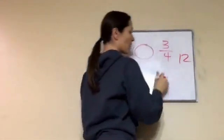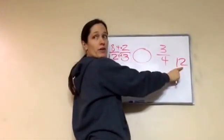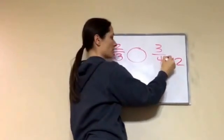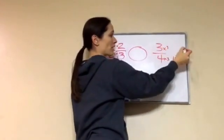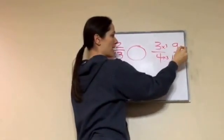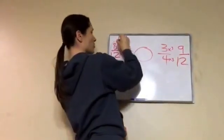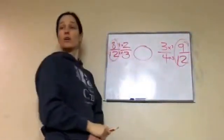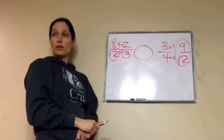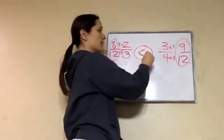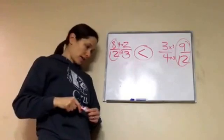Okay. Let's look at this one. How do I get from 4 to 12? Times 3. Times 3. 3 times 3 is 9. So I have 8 twelfths and 9 twelfths. Which one is bigger? 9. Very good. And that is our answer.